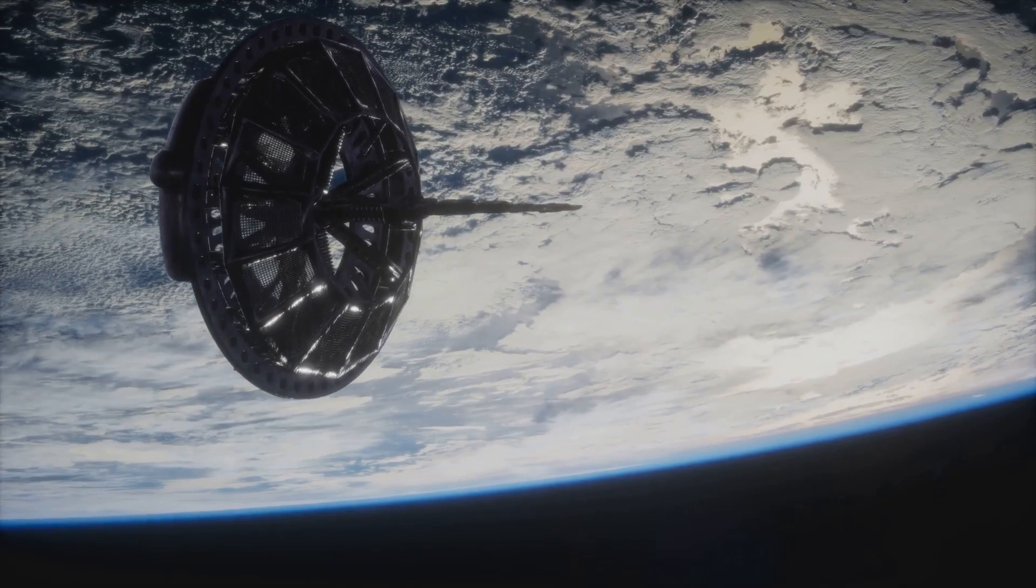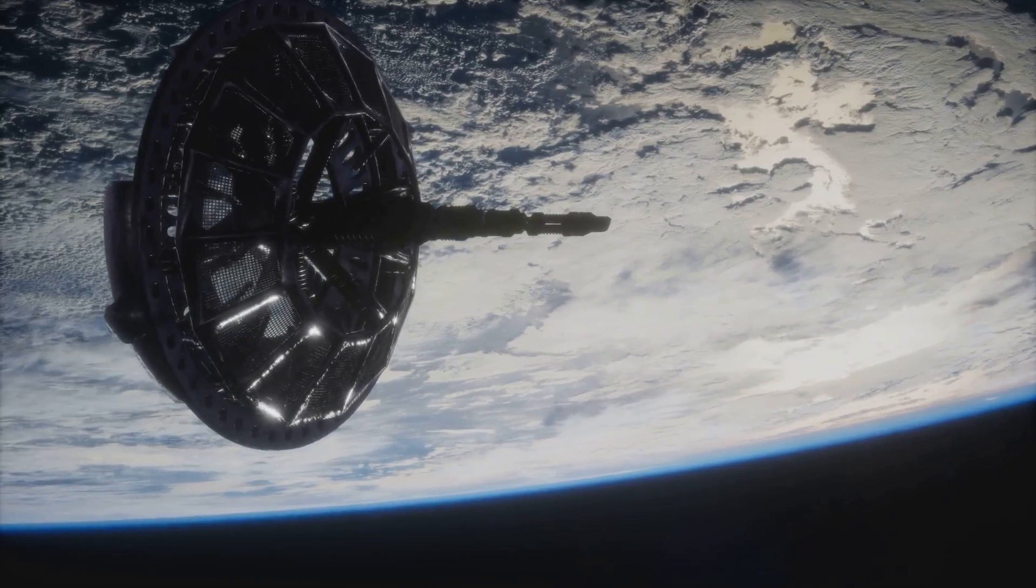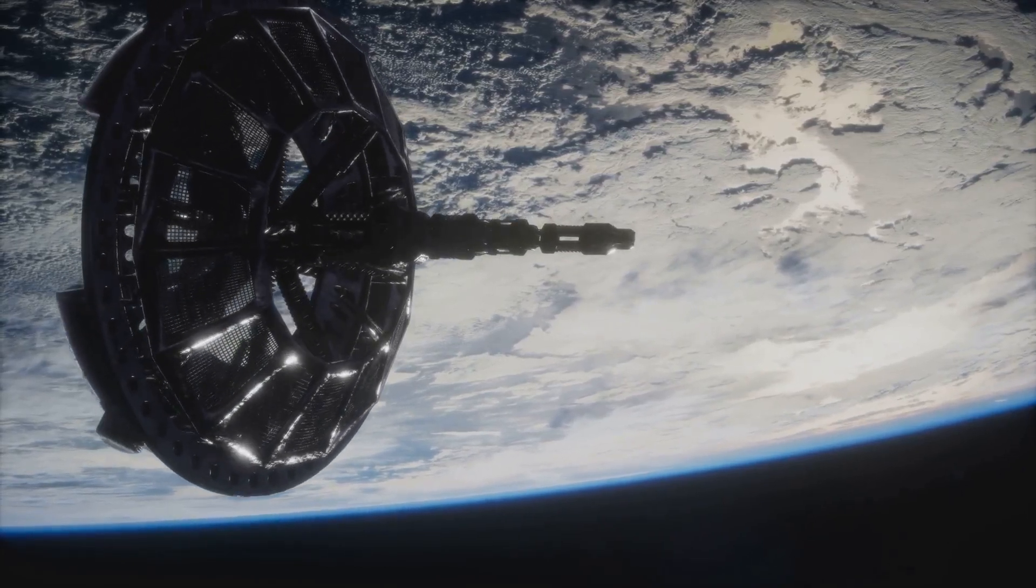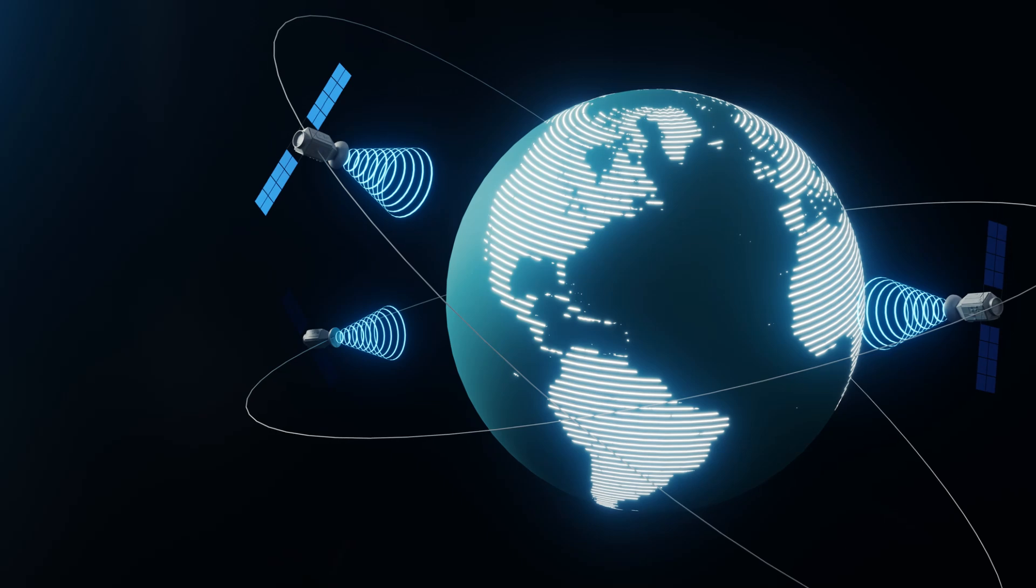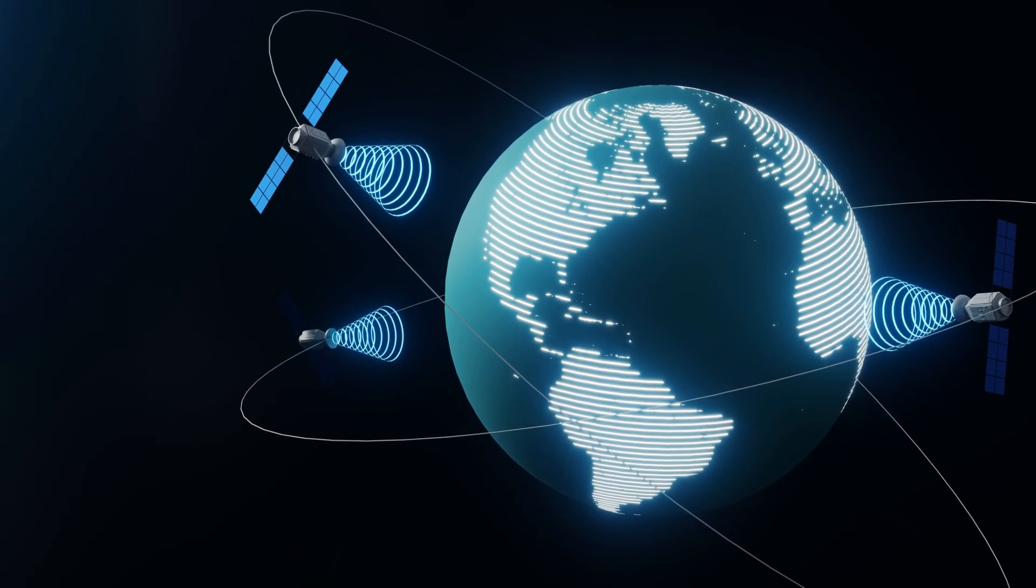Satellites rely on Earth's rotation for stable orbits. Without it, their trajectories would destabilize, leading to global communication failures. GPS systems, internet services, and even weather forecasting would collapse.